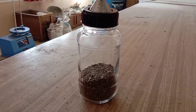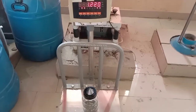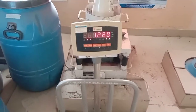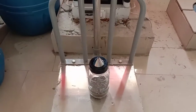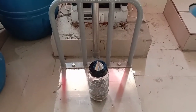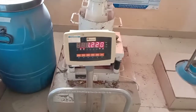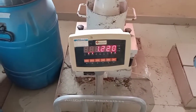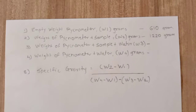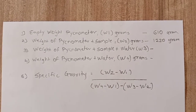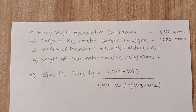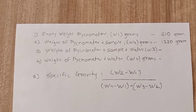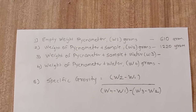This is the weight of the pycnometer plus fine aggregates — the weight is 1220 grams. I have written here 1220 grams as the weight of pycnometer plus fine aggregate.